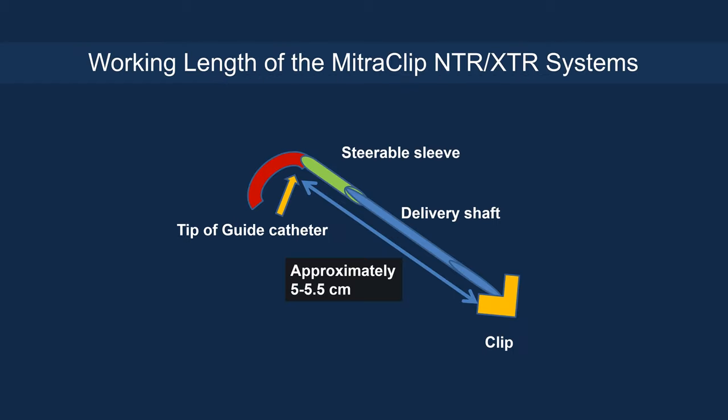The working length of the MitraClip NTR or XTR system — and now with MitraClip G4 — you have the tip of the guide, the steerable sheath and delivery catheter, and you need to be at a working length of roughly five to five and a half centimeters to the clip.